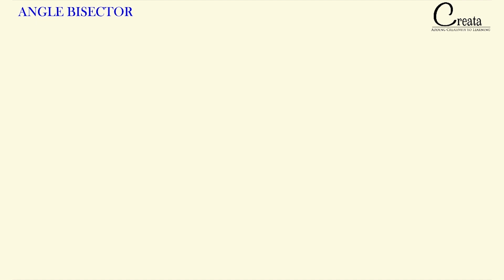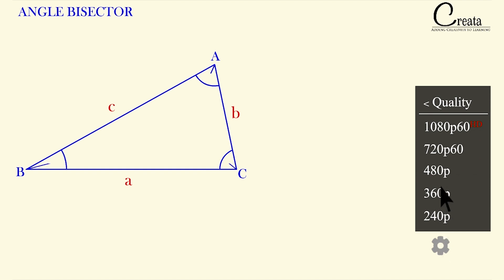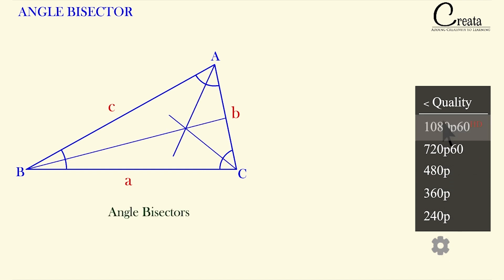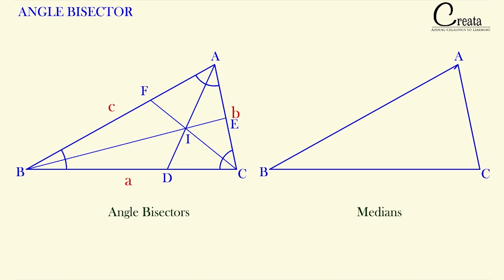Let's consider triangle ABC with sides a, b, and c, and also with the three angle bisectors. These three angle bisectors meet at the point I, that is the incenter of the triangle. Comparing this with the medians — in the case of medians, the point of intersection of the three medians is the point G, that is the centroid.